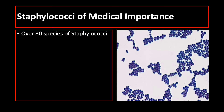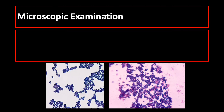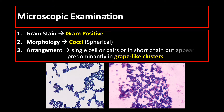There are over 30 species of Staphylococci, and we will just include in our discussion the three common species of medical importance, namely Staphylococcus aureus, Staphylococcus epidermidis, and Staphylococcus saprophyticus. Microscopically, Staphylococcus species is gram-positive when stained with gram stain, spherical or coccus in shape, and generally arranged in grape-like clusters. So, Staphylococcus species are gram-positive cocci in clusters.